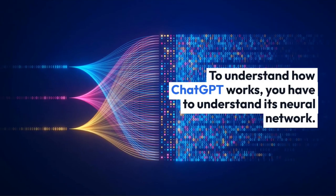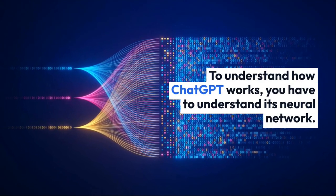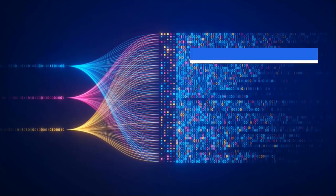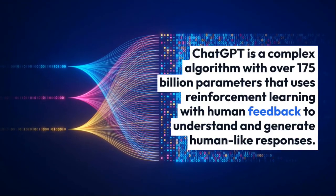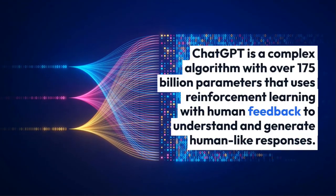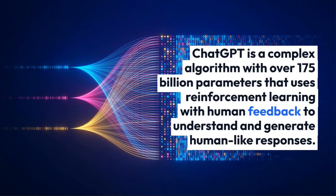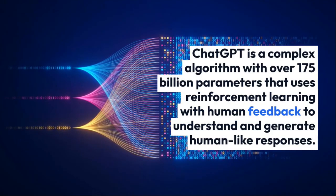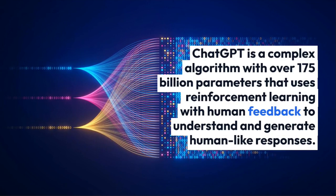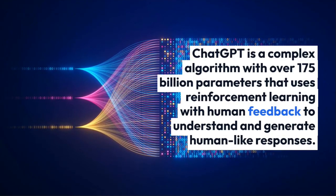To understand how ChatGPT works, you have to understand its neural network. It is a complex, many-layered algorithm modeled after the human brain, with over 175 billion parameters that allow it to understand your prompts and generate human-like responses.